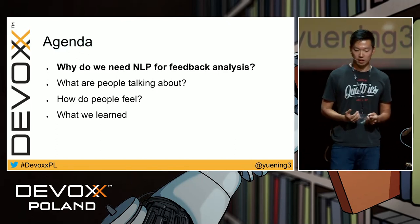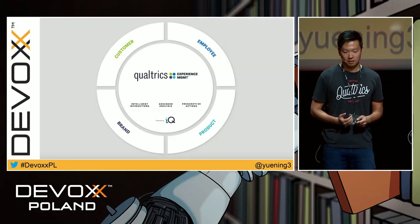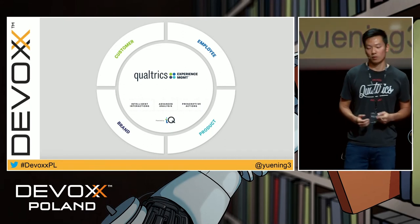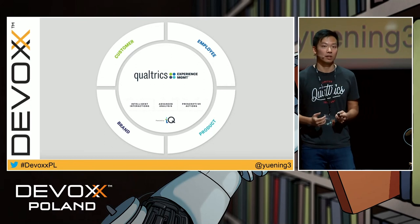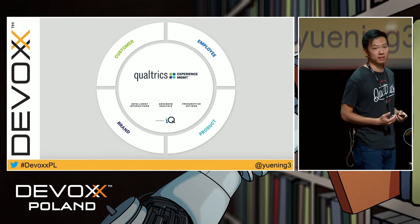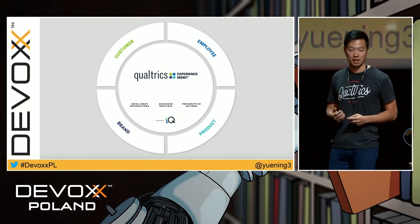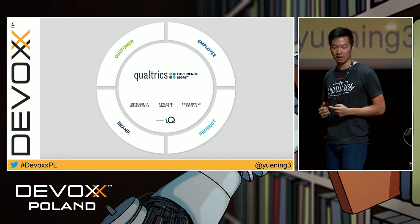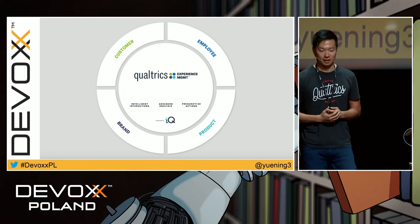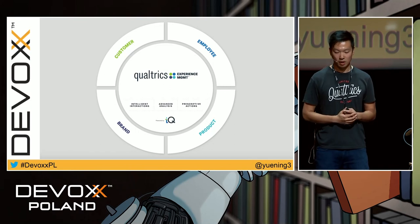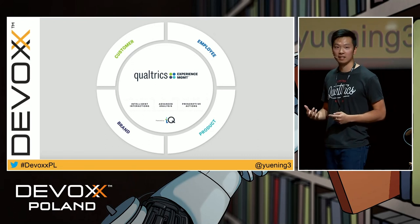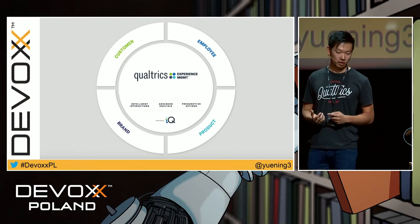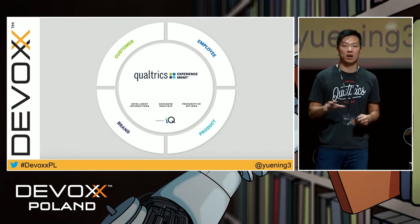Why do we need NLP for feedback analysis? If you are a business owner, there are really four main things you need to care about: making sure your customers are happy, ensuring your employees are engaged, making wise investments in your branding, and building the right features for your product. At Qualtrics — I'm an engineering manager there and my team works on text analytics — we provide a platform for clients to collect, analyze, and act on feedback so they can manage all four of these important experience areas within a single solution.